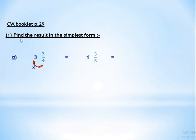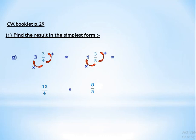We multiply 3 by 4, then add 3, and keep the denominator as it is. So 3 times 4 equals 12, and 12 plus 3 equals 15, giving us 15 over 4. For the second mixed number: 1 times 5 equals 5, and 5 plus 3 equals 8, giving us 8 over 5.